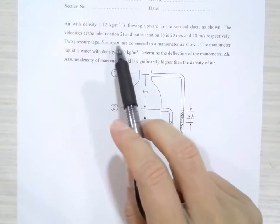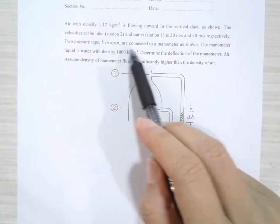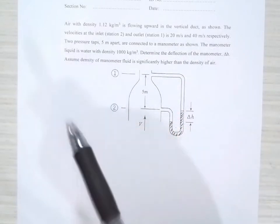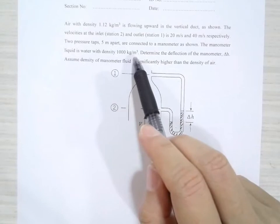Two pressure taps, 5 millimeter apart, are connected to a manometer as shown here, and the manometer liquid is water with density 1000 kg per meter cube.